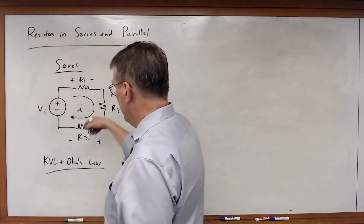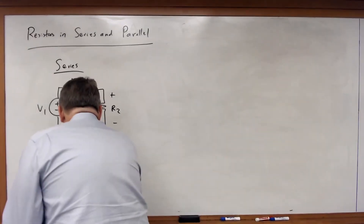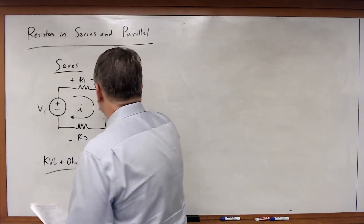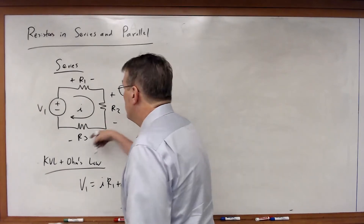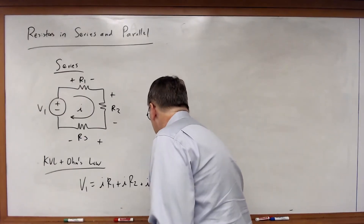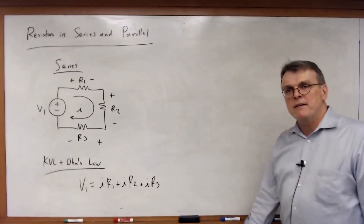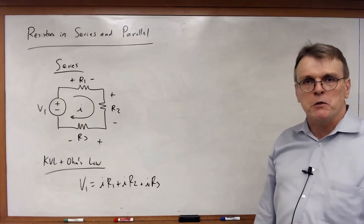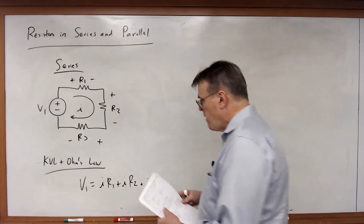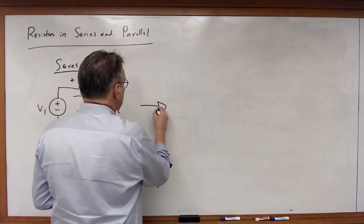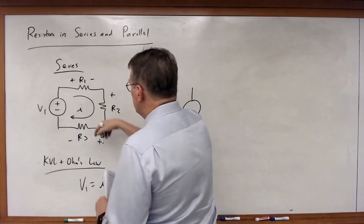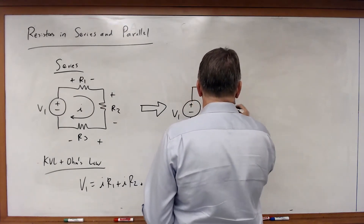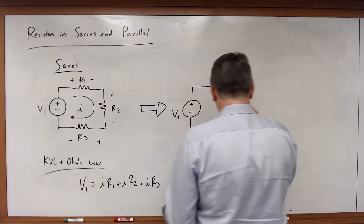Going around the loop, V1 is equal to IR1 plus IR2 plus IR3. I've combined everything into a single equation without even writing out separate voltage variables across each resistor. Now my claim is that I can replace those three resistors with a single equivalent resistor.